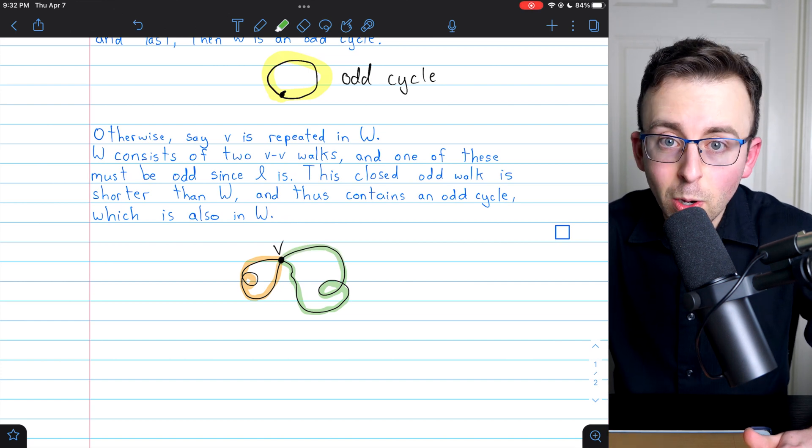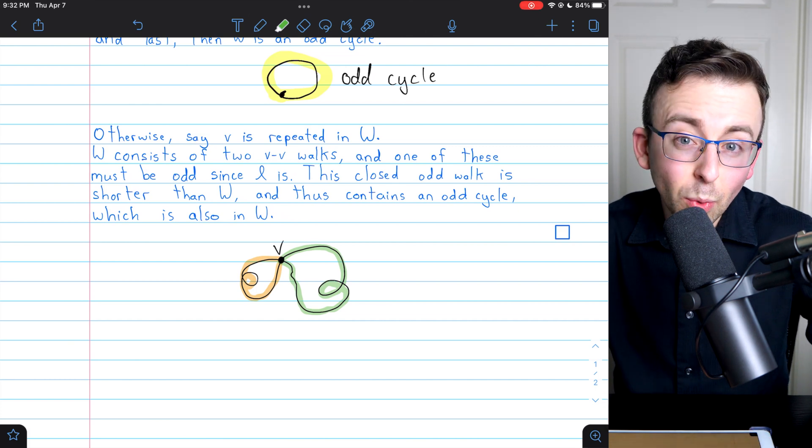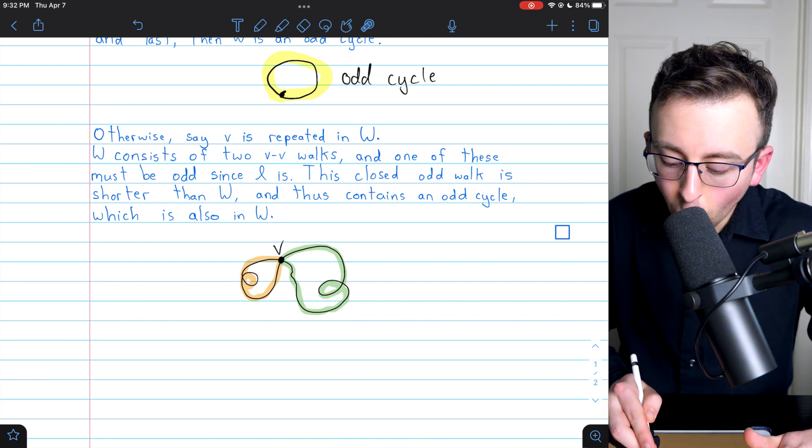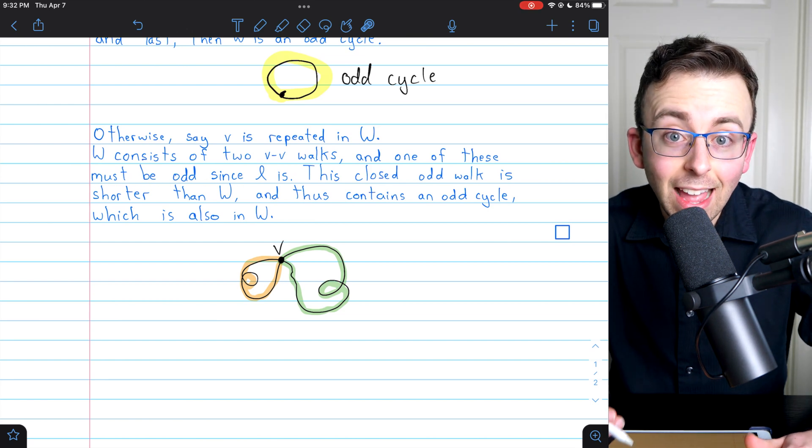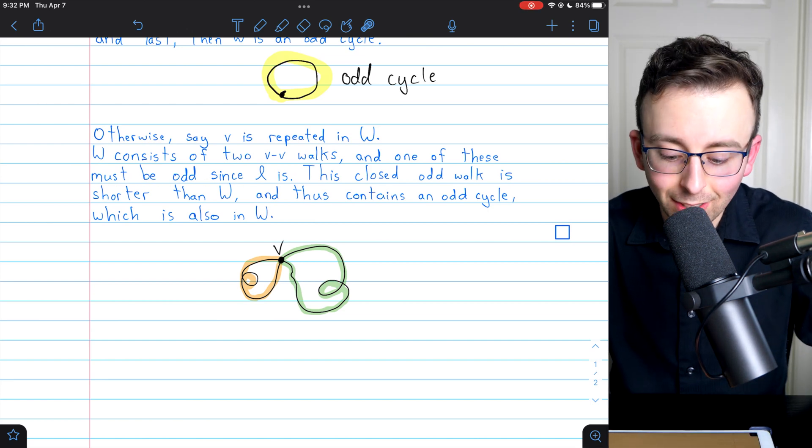Similar to the logic we were saying earlier when I gave you the intuition behind this result, one of these VV walks has to be odd, because L is odd, the total length of W.